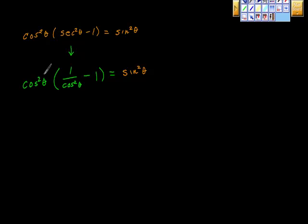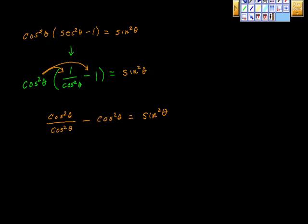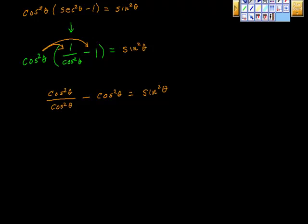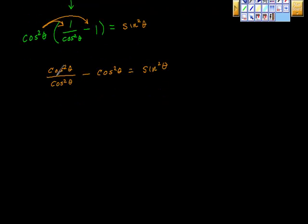Just a little bit of algebra — we're going to distribute to both terms. Cosine squared theta times 1 over cosine squared theta is cosine squared theta over cosine squared theta, which equals 1. And cosine squared theta times negative 1 is negative cosine squared theta. The sine squared theta on the right has not been touched; it comes down as sine squared theta as we're converting the left-hand side.